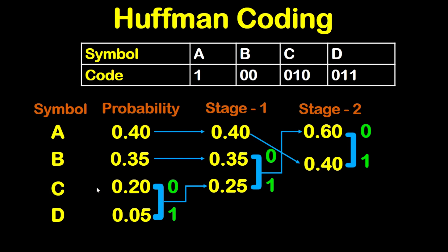Now for C, trace the path. We have 0, then 1, then 0. Reading numbers from right to left: 0, 1, 0. So the code for C is 0 1 0.